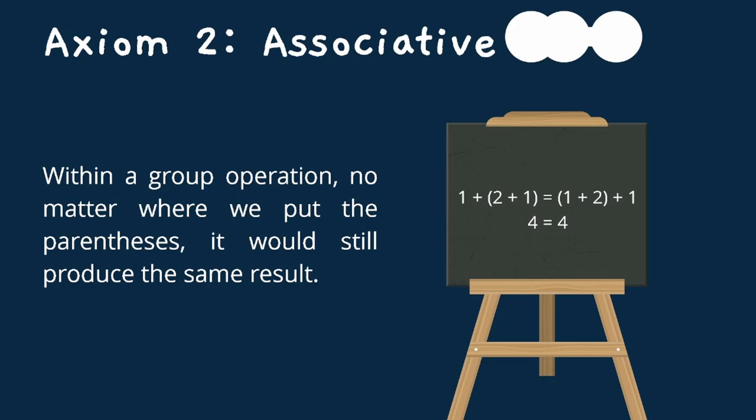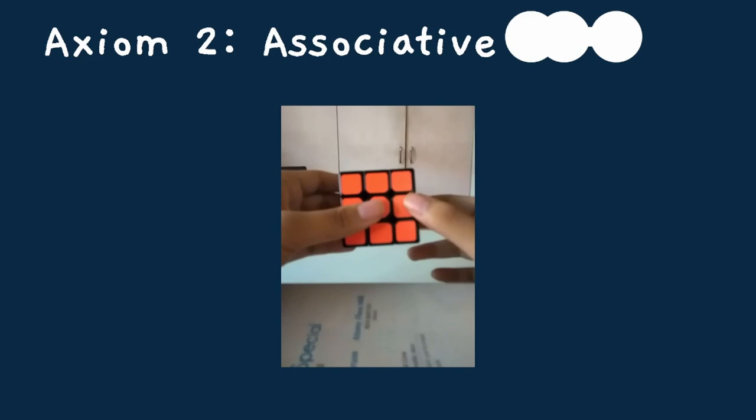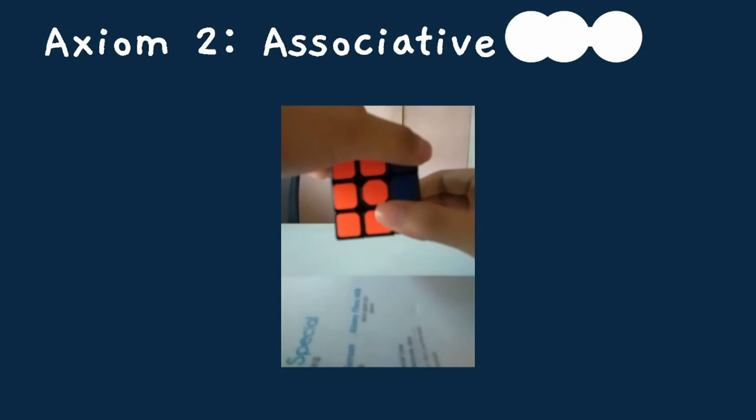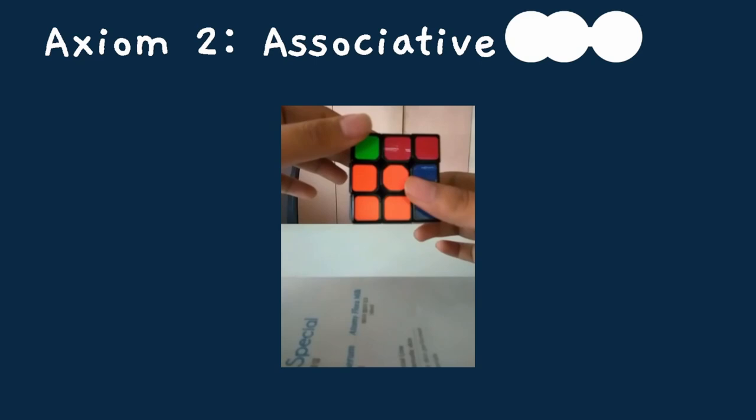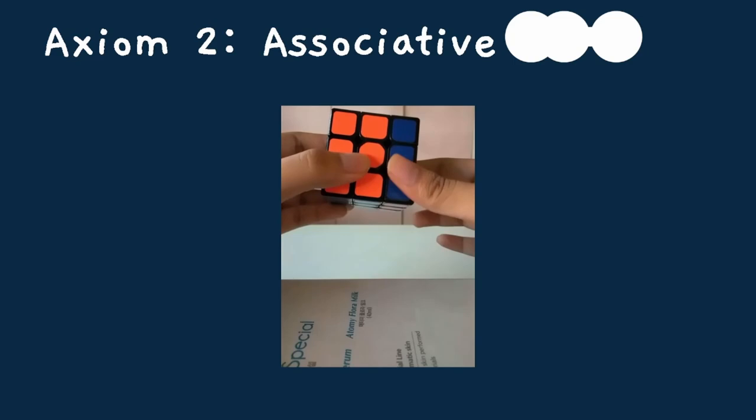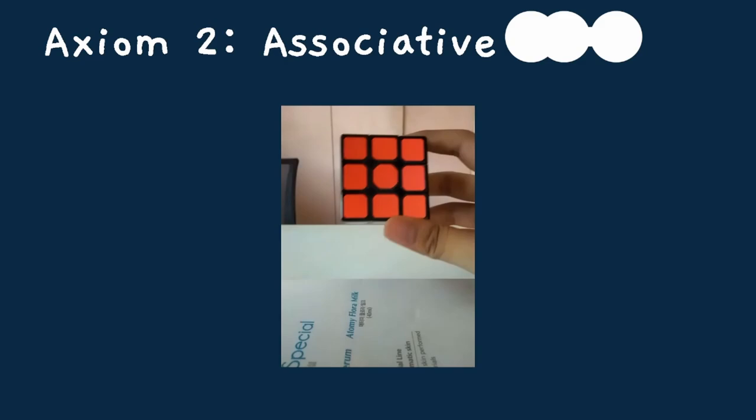Axiom 2, associative, states that within a group operation, wherever we put the parenthesis, it would still produce the same result. With the use of numbers, we can use the equation 1 plus 2 plus 1. We can add a parenthesis to the last two numbers, and it would produce the same result when we put a parenthesis to the first two numbers. With the use of a Rubik's cube, let's say that we did an algorithm wherein we rotate the right side clockwise once and rotate the top side clockwise twice. This algorithm is equivalent to rotating the top side counterclockwise twice, followed by rotating the right side counterclockwise once. That is the associative axiom.